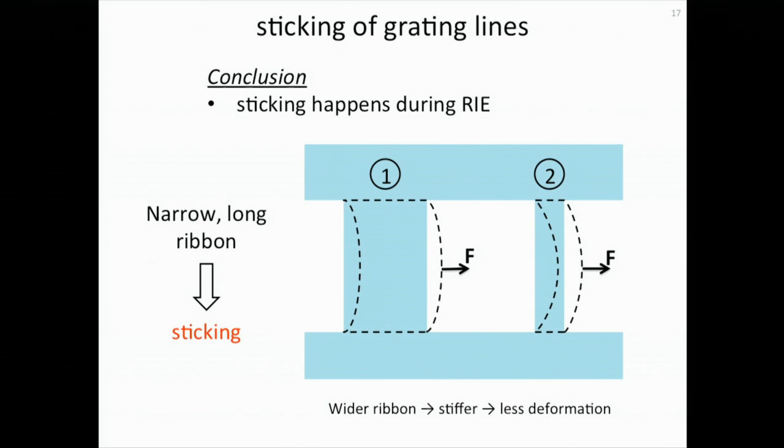Therefore, we come to the conclusion that the sticking problem occurs during or after reactive ion etching. One possible explanation is that during the fabrication process, there could be some forces applied to the silicon nitride ribbon or the grating lines. It can be a capillary force or electrostatic force. When this force is applied to the silicon nitride ribbon, it will deform and the nearest silicon nitride ribbons will become a cluster and hence give rise to the sticking problems. The fact that a narrow ribbon is more susceptible to the sticking problem also confirms this explanation, because a wider or a fatter silicon nitride beam will be more stiffer and it will have less deformation under the same force, so it is less likely to have this sticking problem.